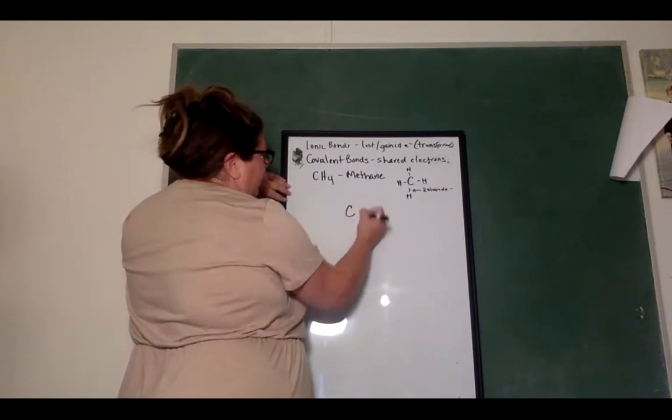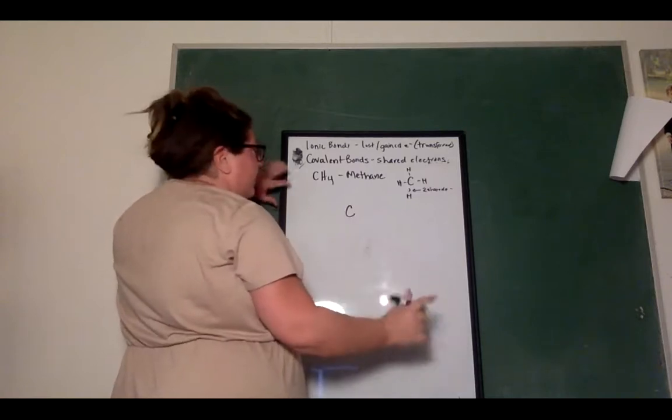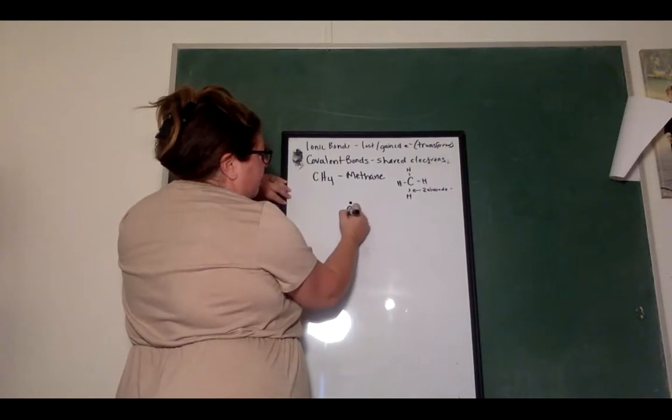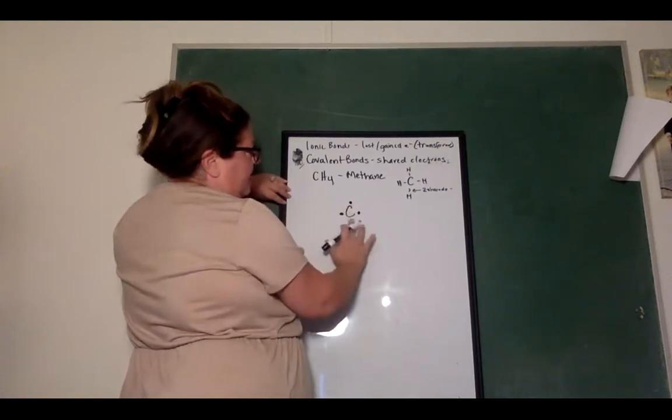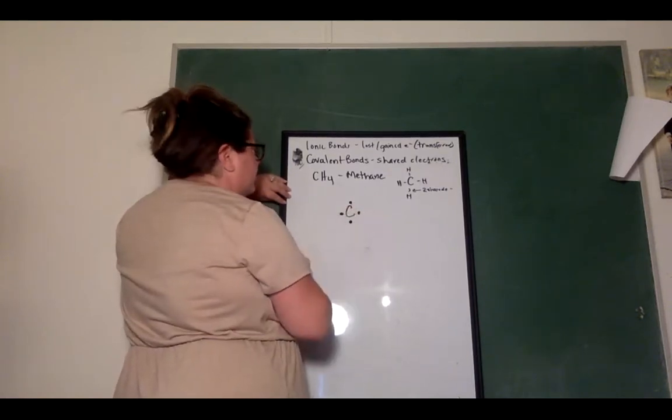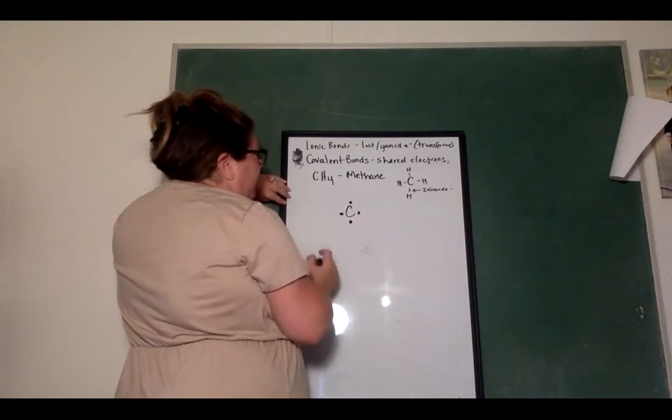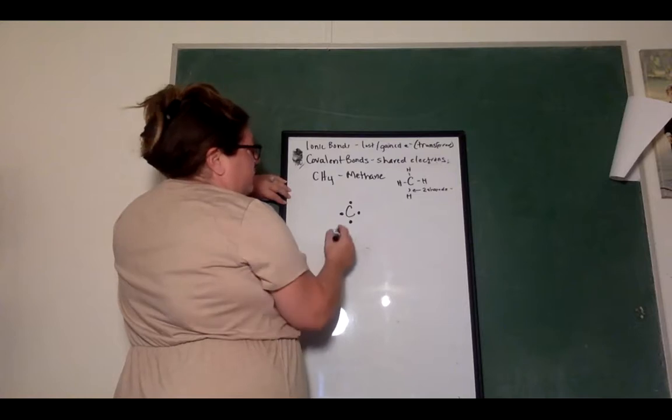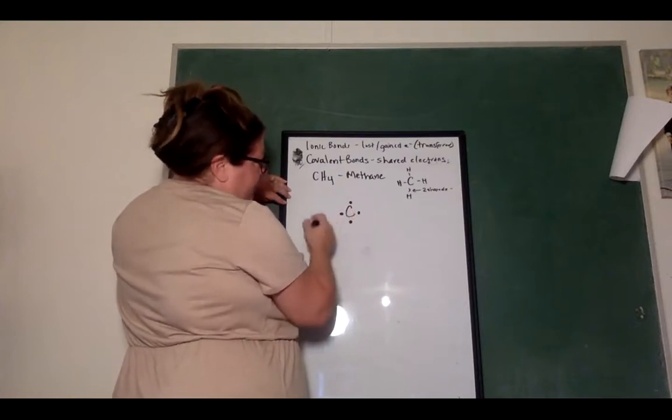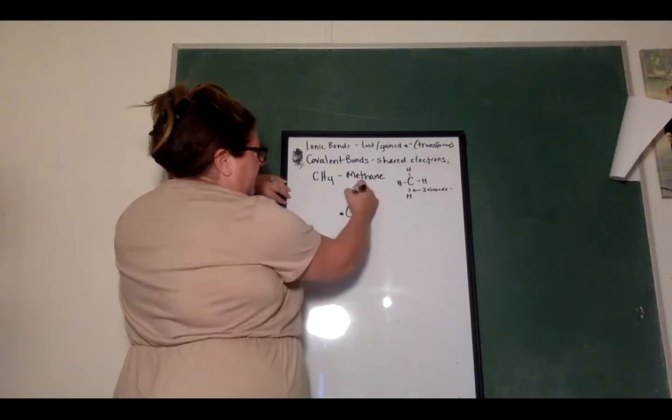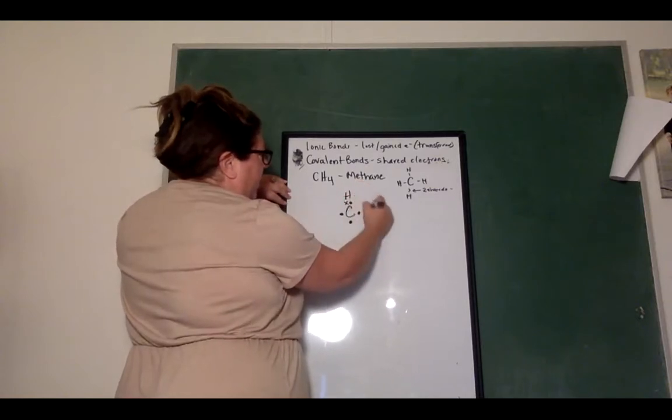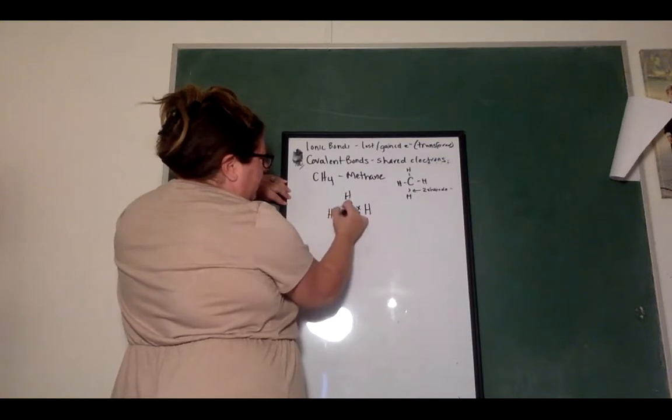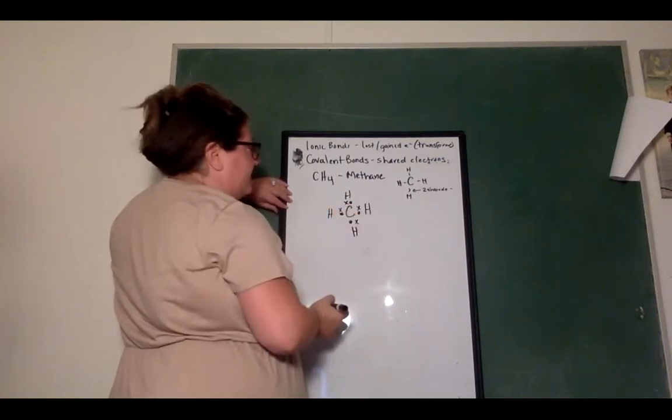So carbon, and I'm going to use just the valence electrons here. So carbon has four valence electrons. So I'm going to put four dots just around carbon. These are just the valence electrons. And then hydrogen has one valence electron. So how many hydrogens, if this needs eight, only has four, how many hydrogens would it need? It would need four hydrogens to come in and share its valence electron.